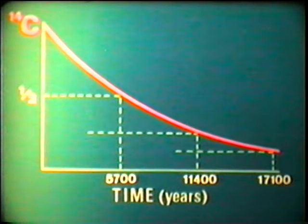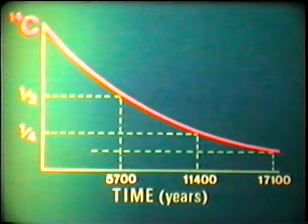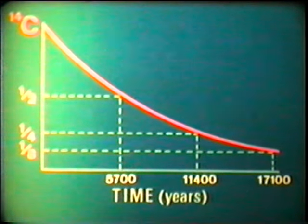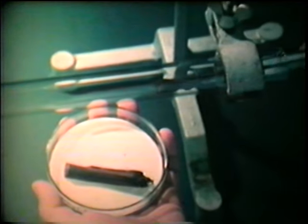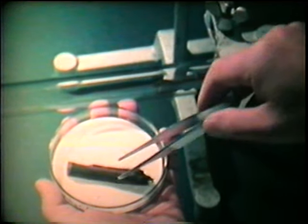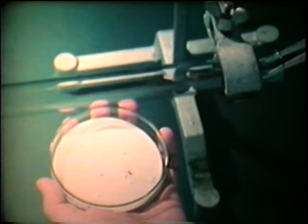When we know what fraction of the original carbon-14 is left, we have an idea of how old the material is. With radiocarbon dating, we can find the age of organic materials like shells, bones, or charcoal from an Ice Age campfire. We'll test these bits of partially burnt wood to find their age.